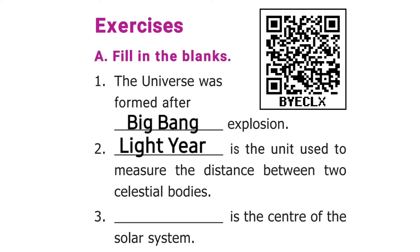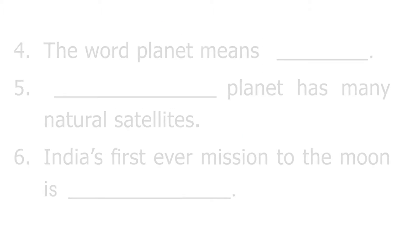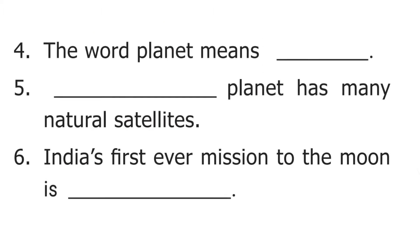The third question is: dash is the center of the solar system. The answer is Sun. The fourth question is: the word planet means. The answer is wanderer. The fifth question is: dash planet has many natural satellites. The answer is Jupiter.